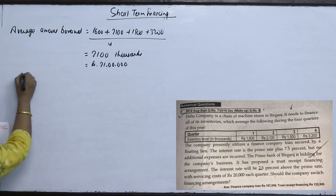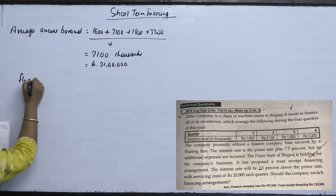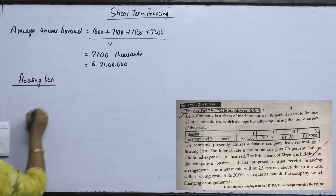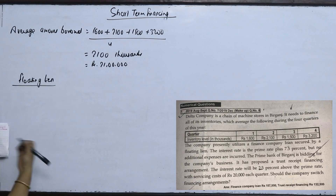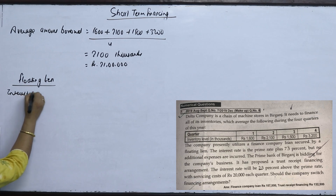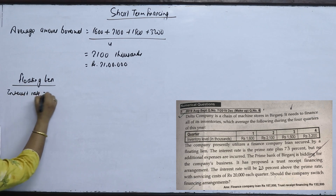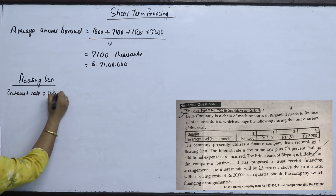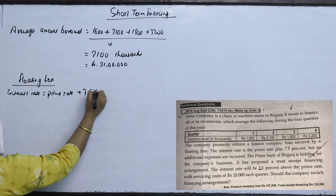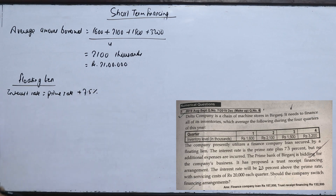The company presently utilizes a finance company loan. The finance company loan is secured by a floating line. The interest rate is the prime rate plus 7.5%, but no additional expenses are incurred.